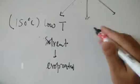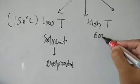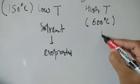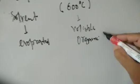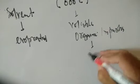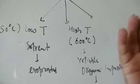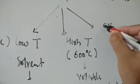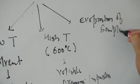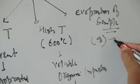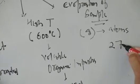Step number two: at a slightly higher temperature, around 600 degrees, what happens is that volatile organic materials — organic impurities or compounds — get removed. Step number three: the sample gets evaporated and converted into the gaseous state. Once it gets evaporated, the gas absorbs the heat and gets converted into atoms. This is the final state and here the temperature is very high — 2700 degrees.